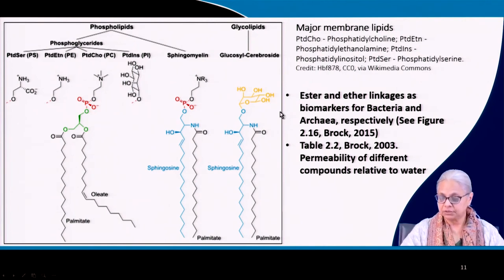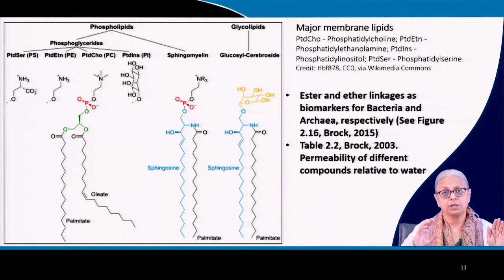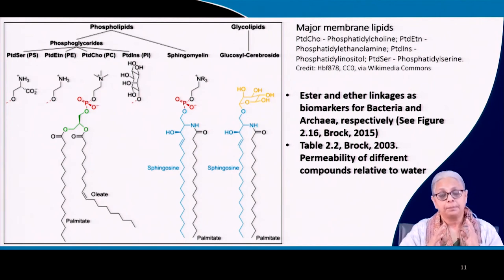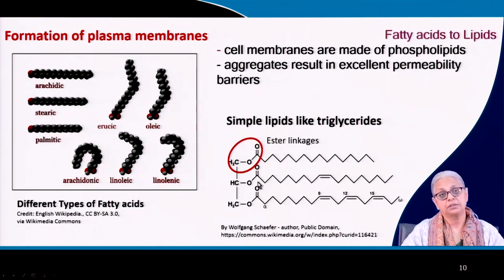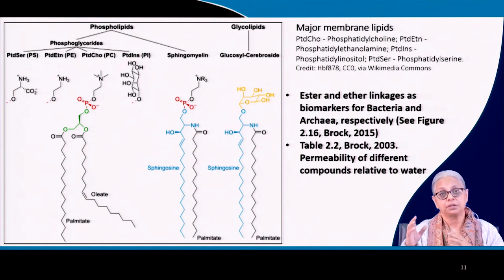An important point is the difference between bacteria and archaeobacteria. These are two of the three domains of all living organisms — the third being eukaryotes. Bacteria and eukaryotes have similar plasma membranes with ester linkages, whereas archaeobacteria, which go back further in evolutionary history, have ether linkages. This is used as a biomarker to separate archaeobacteria from bacteria.